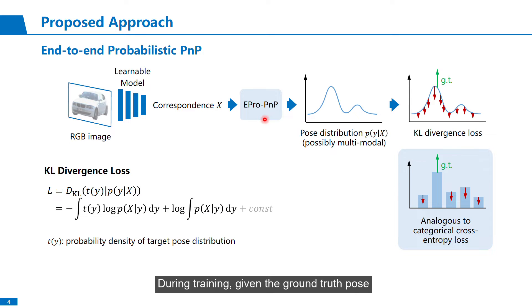During training, given a ground-truth pose, we can define a target pose distribution and minimize the KL divergence between the target and prediction. Again, this is analogous to the categorical cross-entropy loss, but on a continuous domain.